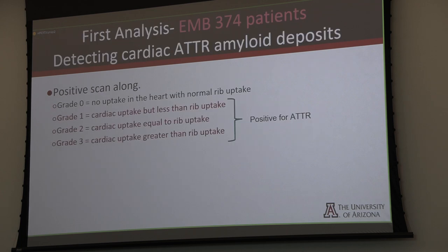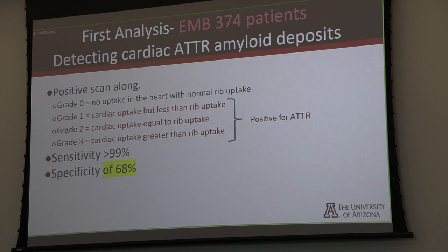They performed multiple ROC analyses. First, using only biopsied patients and calling any cardiac uptake — grade 1, 2, or 3 — positive, while calling absolutely negative scans negative on planar only. That yielded sensitivity of 99% but specificity of only 68%. This means patients were being called ATTR whether true positive or false positive — and that's a problem.